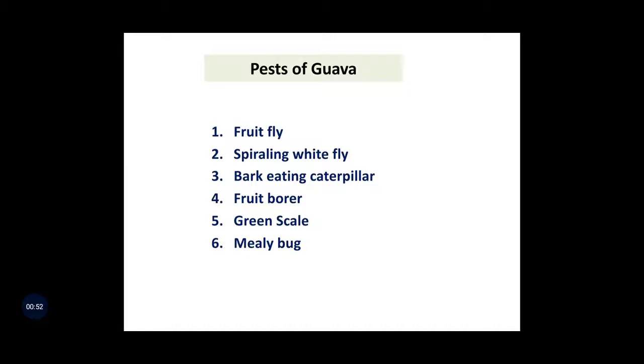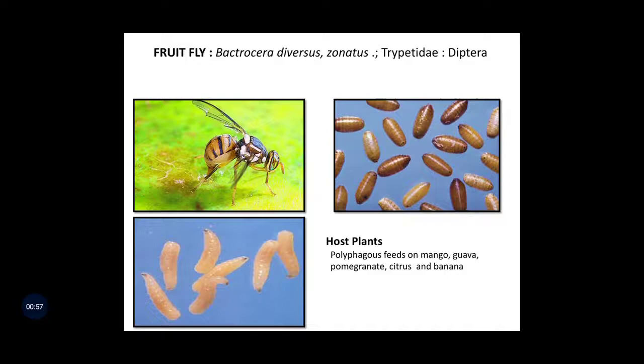The first and major pest of Guava is fruit fly, i.e., Bactrocera diversus. It belongs to order Diptera and family Tephritidae. When the pest belongs to order Diptera, the damaging stage is always maggots — maggots meaning nothing but the legless larva. Here we can see the adult fly in the first image, then pupa, and in the last image we can see the maggots or legless larva of the fruit fly.